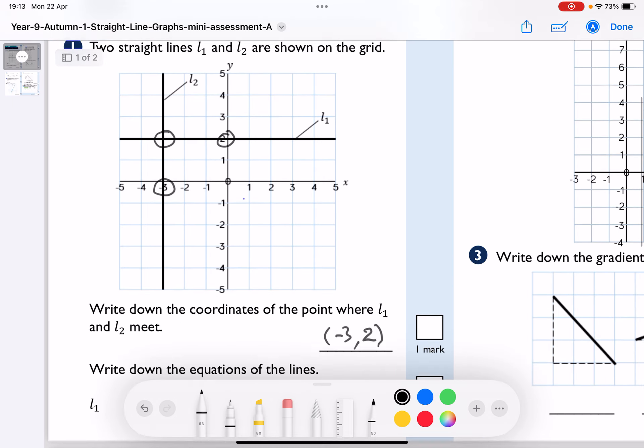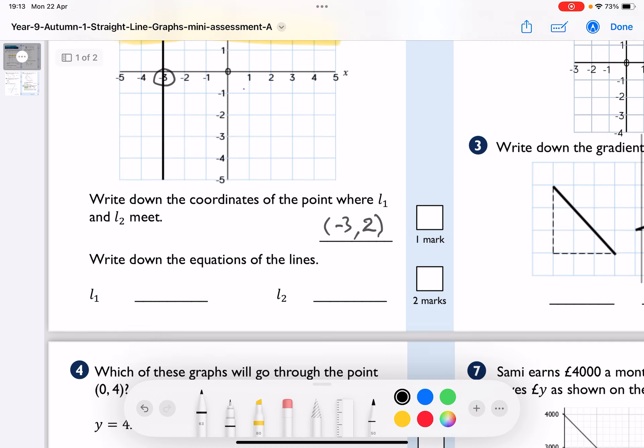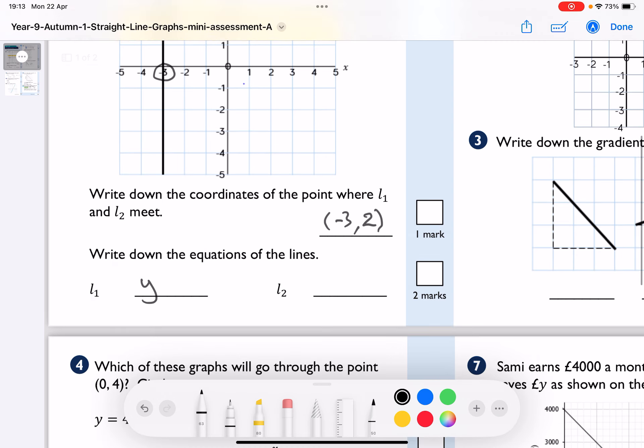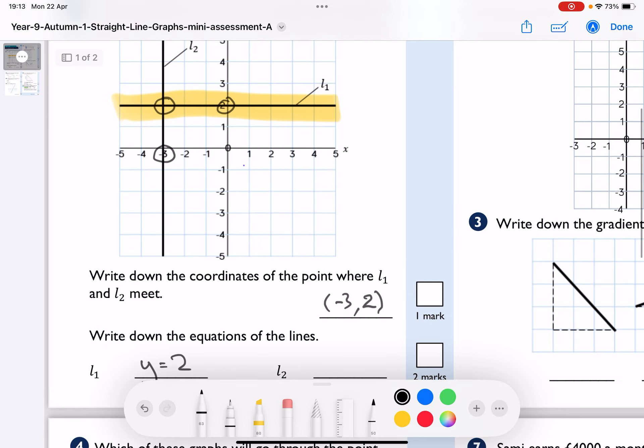Write down the equations of the line, so L1, L1 is this line going across here. Now first of all, we can see that it is going through y equals 2, so that's actually the name of the line, y equals 2. So if you've got a horizontal line going straight across, look at the number on the y-axis that it's going through, and that's the equation of it.